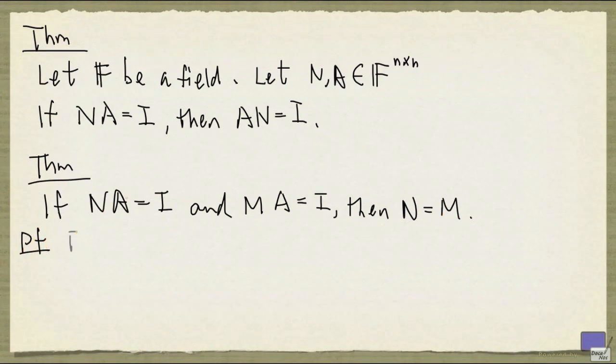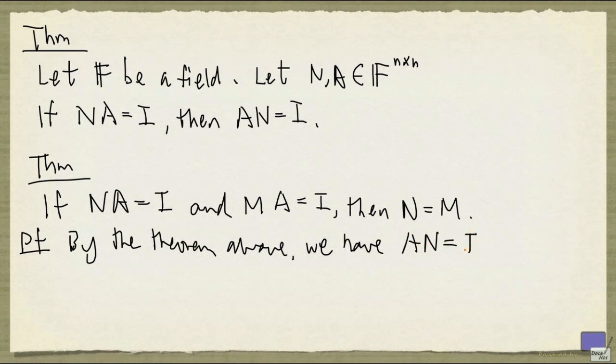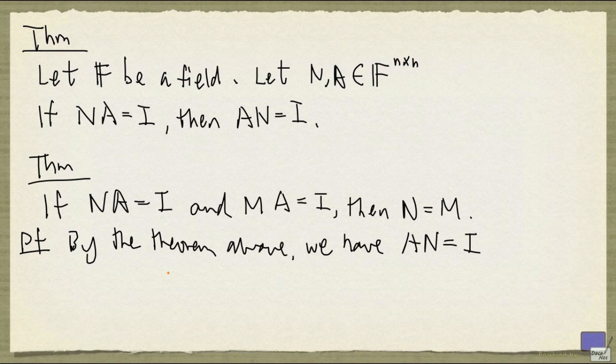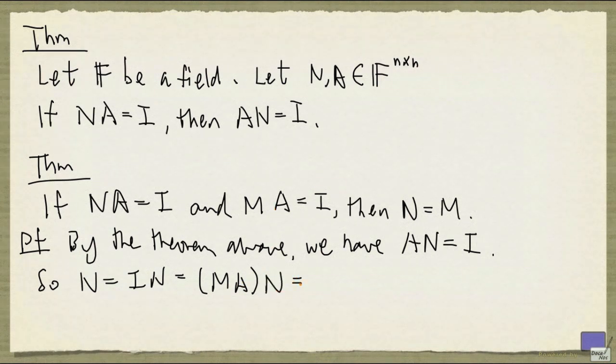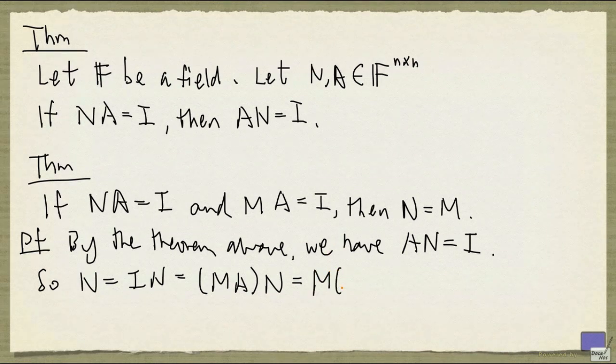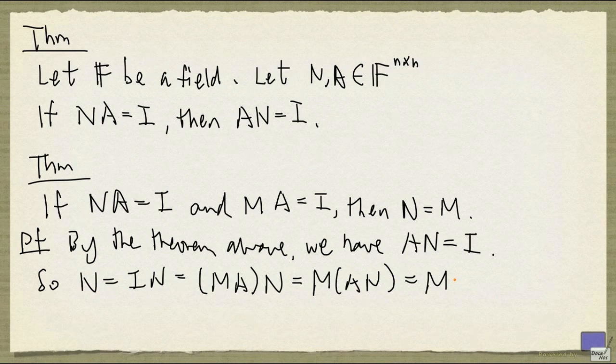The proof is very simple. By the theorem above, we have A times N equal to I, because N times A is equal to I. So what that means is, I can write N as I times N, and I is M times A. This is what we have up here. And so I have an N here. And then by associativity of matrix multiplication, I can write it as this. And I know that A times N is I, so this is just M times I, and this is just M.